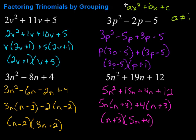So, factoring trinomials by grouping — this is handy for us when the A value is not equal to one. We take the middle term and break it up into the factors of A times C, the first times the third term, that either add up to or have a difference of whatever that B term is. Break those up, and then we can factor by grouping. Hope this video was helpful, and I know if you keep working hard, you'll do outstanding on your math. Keep after it!